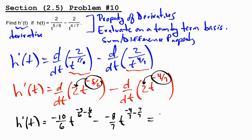This brings us to negative 10 over 6 t to the negative 11-6 exponent. The double negative that occurs here gives us a plus 8 over 7 t to the negative 11 over 7's power.